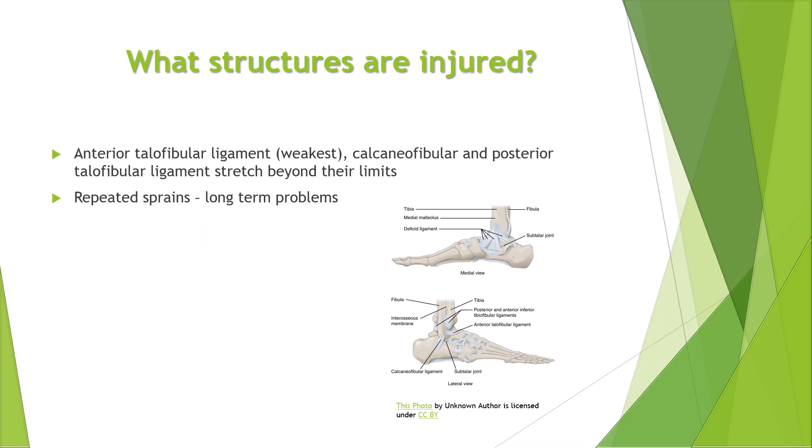What structures are injured in a lateral ligament sprain? It often occurs when the ligaments — known as the anterior talofibular ligament, which is considered the weakest of the three ligaments — the calcaneofibular and posterior fibular ligaments, are stretched beyond their limits and tear.